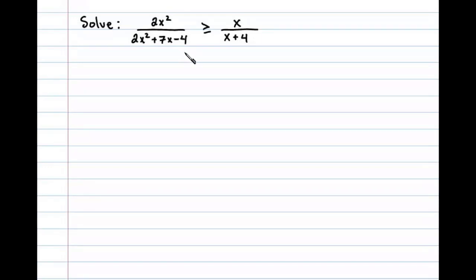Here we're asked to solve a rational inequality. We'll begin by obtaining 0 on the right side. To do that, we'll subtract x over x plus 4 on both sides.